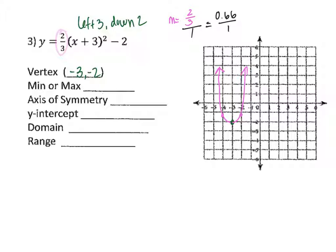Looking at the vertex, it looks like the vertex is a minimum. The axis of symmetry cuts it at x equals negative 3, so we write x equals negative 3.